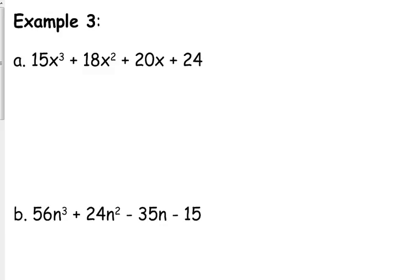Example A. 15x cubed plus 18x squared plus 20x plus 24. Like always, we do want to check and see if the entire expression has a GCF. It doesn't. Three out of our four terms are even, but that first one is not even. 15 and 18 are divisible by 3, but 20 is not. So we don't have an overall GCF. We've got four terms. It is degree three. So let's group them.